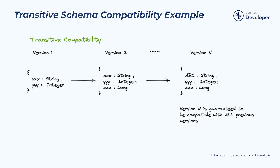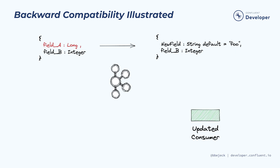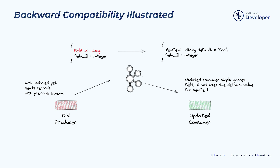Now, let's review how each of the three compatibility modes work. We won't discuss the transitive versions as they follow the exact same rules — they just go back to all previous schemas. With backwards compatibility, you can delete fields from a schema and add fields as long as they have a default value. When you do this, you should update your consumer clients first. In this example, you've evolved a schema by removing field A and adding a new field that has a default value associated with it. By updating the consumer client first, if a producer using the old schema sends records to Kafka, the updated consumer client will continue to work just fine. It will ignore the deleted field A on the record and use the default value provided for the new field.